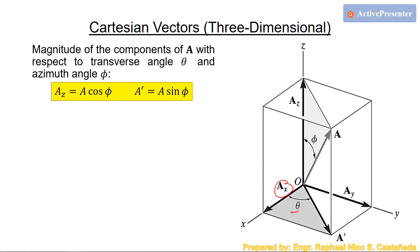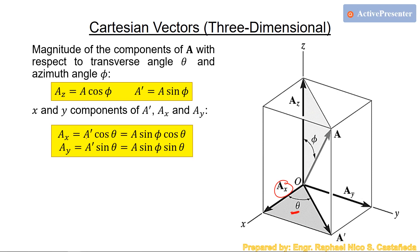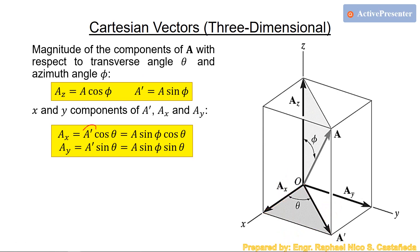In this case, ax is adjacent to theta, so ax equals a_prime·cosine(theta). Using this triangle: cosine(theta) equals ax over a_prime, giving you ax. Then ay equals a_prime·sine(theta) because ay is opposite to theta. Since a_prime equals a·sine(phi) from the previous step, substituting gives you the complete formulas for ax and ay in terms of the transverse angle and azimuth angle.